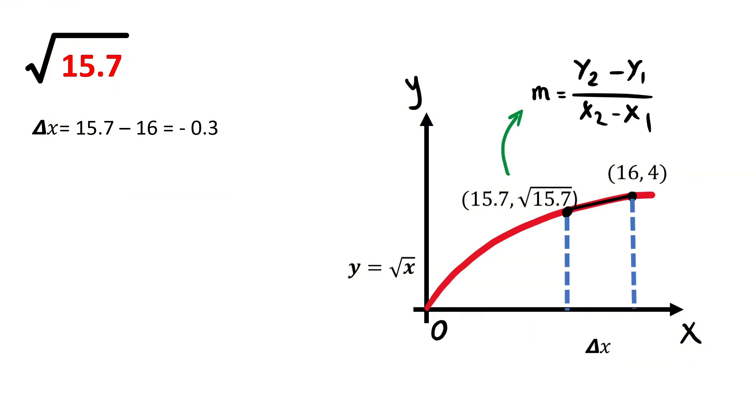Slope is calculated like this. Hence, it will be the square root of 15.7 minus 4 over 15.7 minus 16 or minus 0.3.